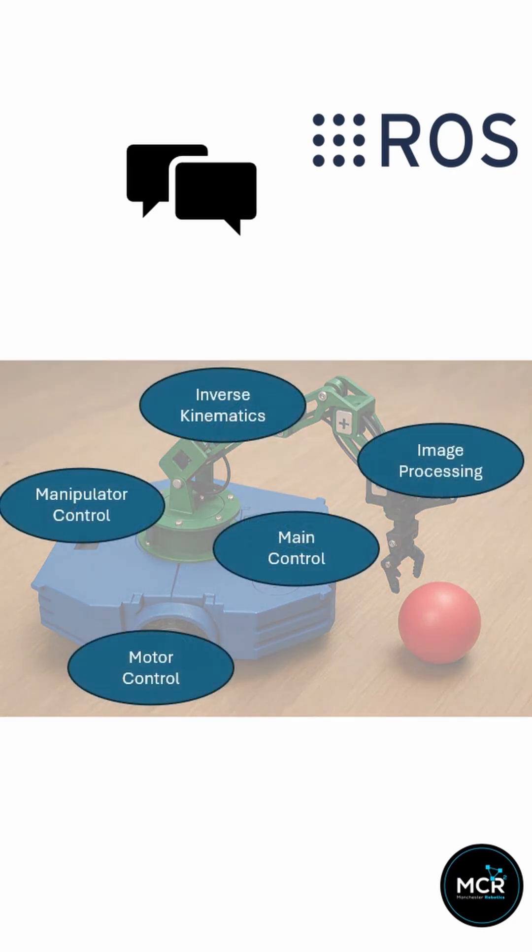In ROS, these individual brains or functions are called nodes. Each node does one specific job, like controlling the wheel or processing camera images. And guess what? They can be programmed in Python or C++. Super flexible.